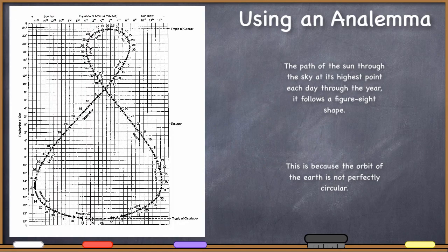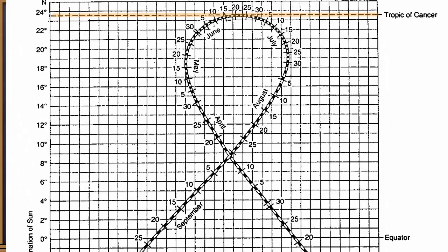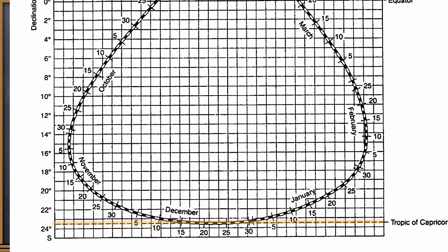So let's take a look at what we see when we look at the analemma. We have the figure-eight shape that is divided into every single day of the year. You'll see all the different months there and all of the different days of the month along the analemma. We also see three different lines of latitude that should be extremely familiar to us: the Tropic of Cancer, the equator, and the Tropic of Capricorn.